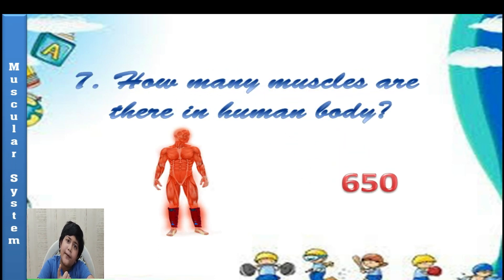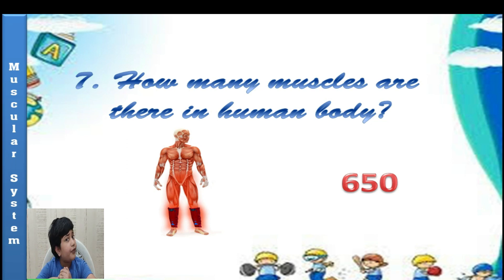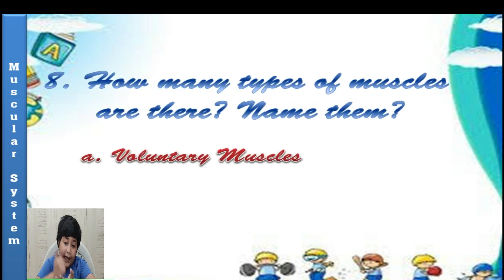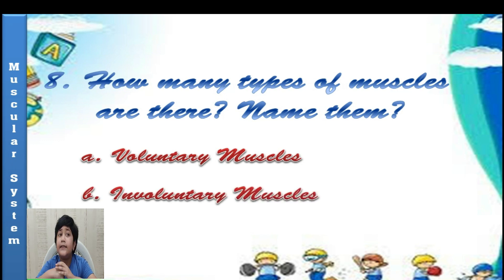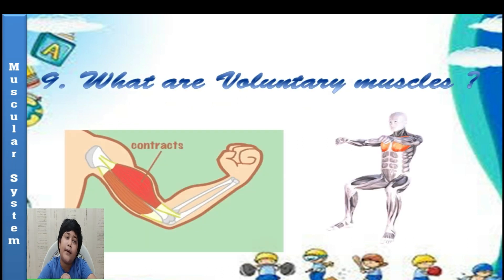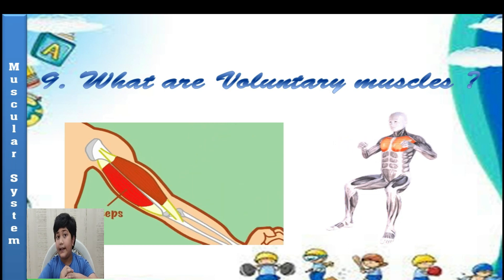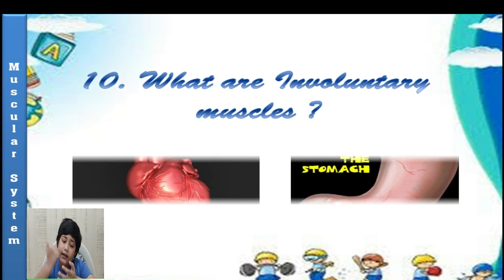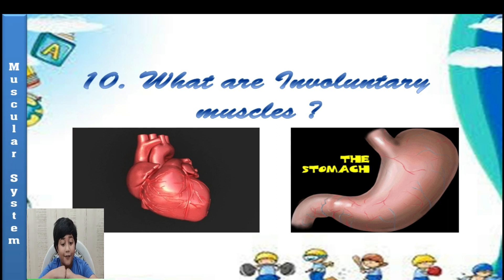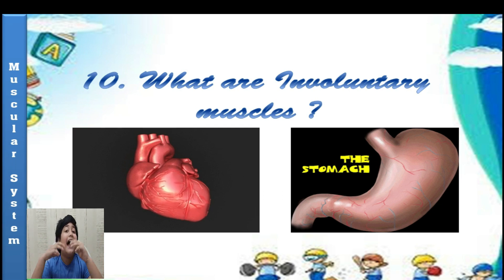How many muscles are there in a human body? There are 650 muscles in a human body. How many types of muscles are there? There are two types of muscles: voluntary muscles and involuntary muscles. Voluntary muscles are the muscles which are in our control — for example, the muscles present in our hands and feet. The muscles which are not in our control are called involuntary muscles — for example, the muscles present in our heart and stomach. Thank God our heart is an involuntary muscle, otherwise we would have to instruct it every moment to beat.